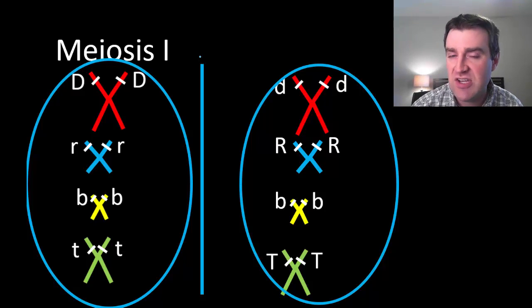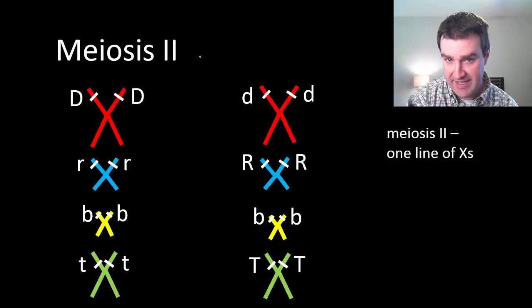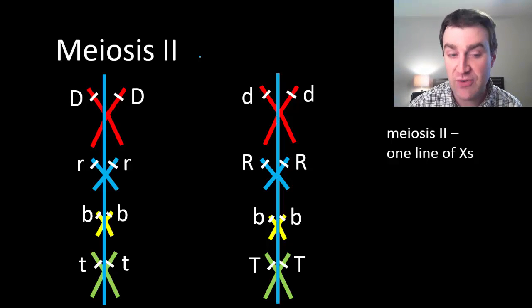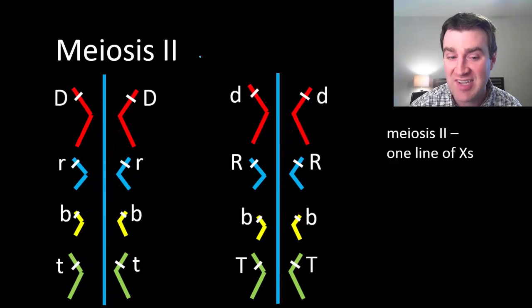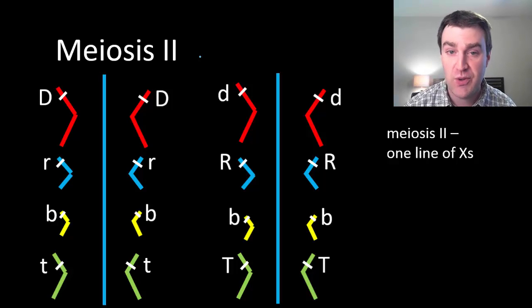And then we're going to continue the process and go into meiosis II. So this is the second division of DNA. And this is going to be a little bit like mitosis. We're going to line them up in one line of X's in each cell this time. Split right through the X's. Split it symmetrically. And that'll split the X copies apart from each other. Each one of these cells will once again undergo cytokinesis.